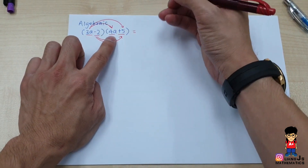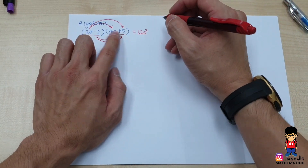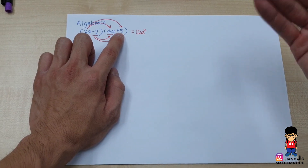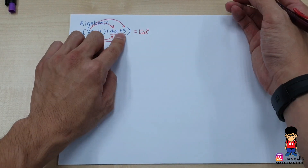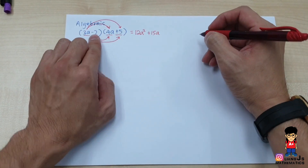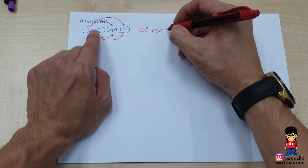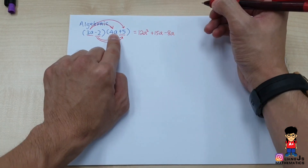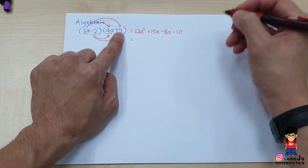3 times 4 gives 12, a times a gives a squared. Then 3a times plus 5 — the symbol is very important as it affects your answer. Double positive gives positive: 3 times 5 gives 15a. Then we come to minus 2 and 4a: minus times plus gives minus, 2 times 4 gives 8a. Finally minus 2 times plus 5 gives minus 10.